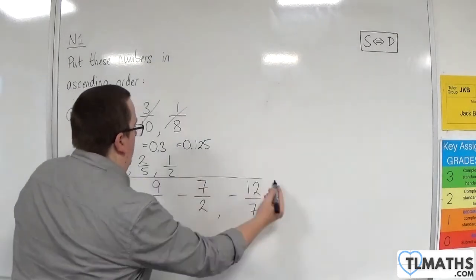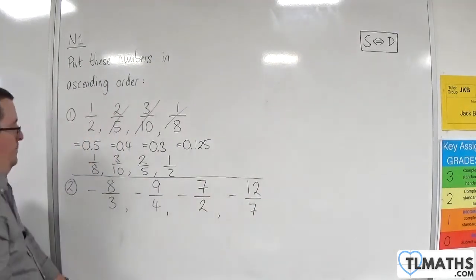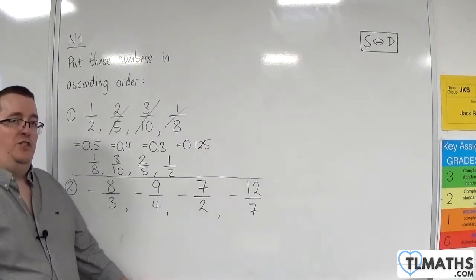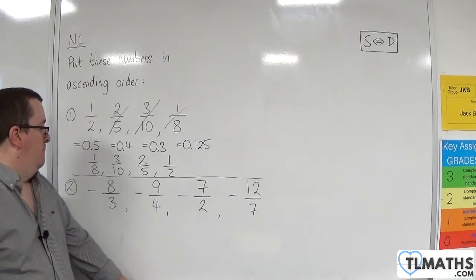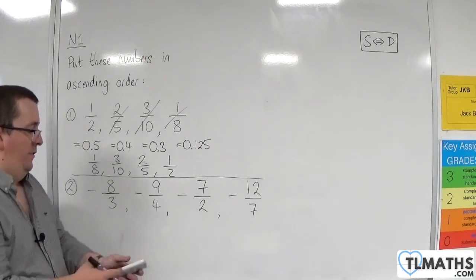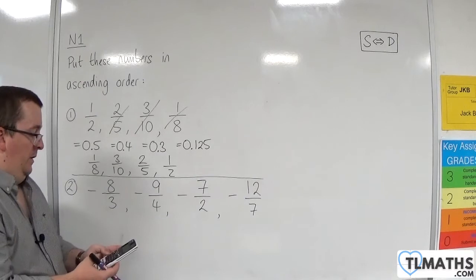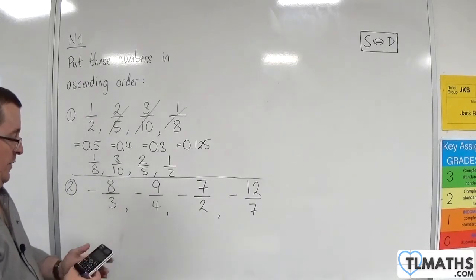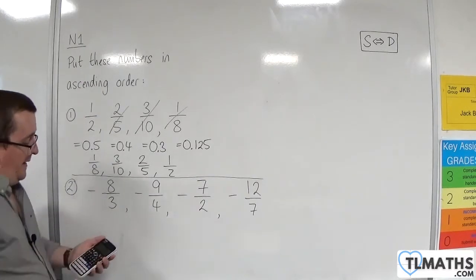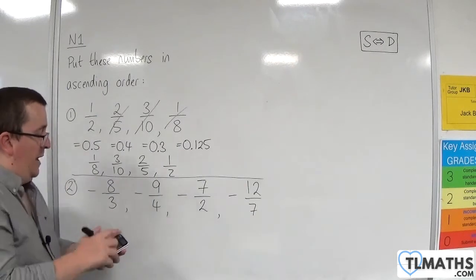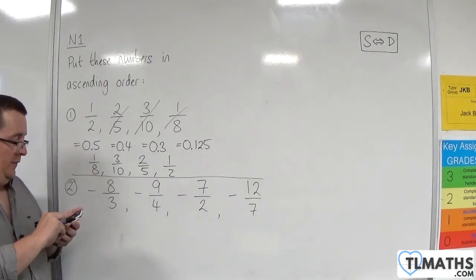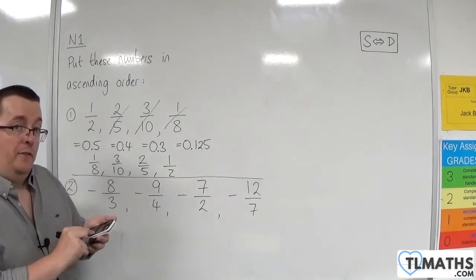Let's take a look at example number two. Again, I'm going to convert them into decimals. So minus eight thirds — minus eight divided by three — I press the SD button, and on my calculator you get minus two point six six six six six seven.